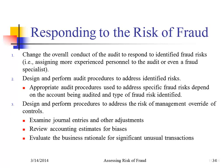Based on the audit risk model, they're going to set audit risk at moderate or low. Auditors say, I'm only willing to accept moderate risk — the moderate risk that I will issue an incorrect opinion. That's what audit risk is: the risk that the auditor issues an incorrect opinion. How do they respond to that? How do they achieve moderate risk?